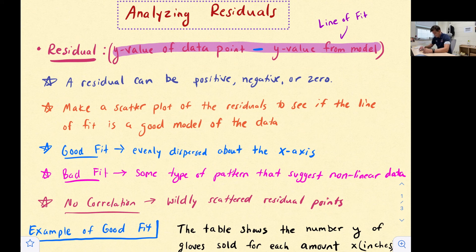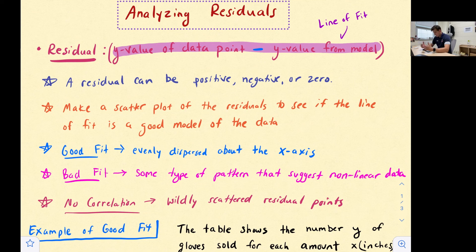A residual can be positive, negative, or zero. It's positive if the data point is above the line of best fit, negative if it's below it, and zero if the point is on the line. Once we find all of our residuals, we can make a scatterplot of the residuals to see if the line of fit is a good model for the data.